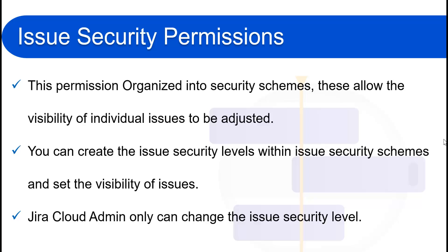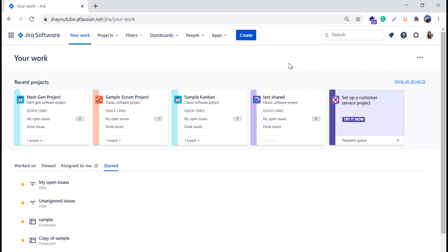Those are the three permissions I have explained — global, project, and issue security permissions. That was just an overview; in my upcoming videos I'll cover each one individually. Now we will go to our Jira Cloud instance and see how to access the global permissions, project permissions, and issue security permissions.